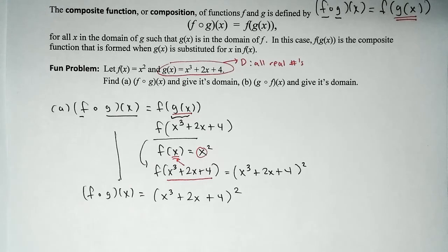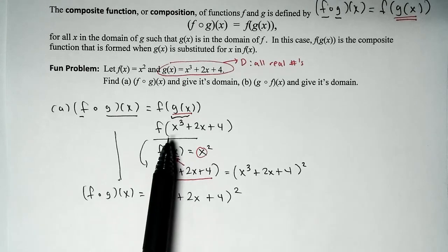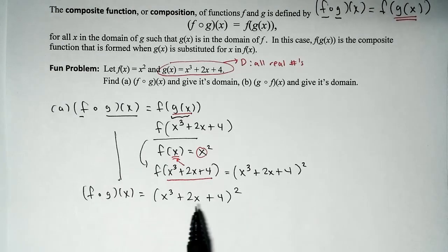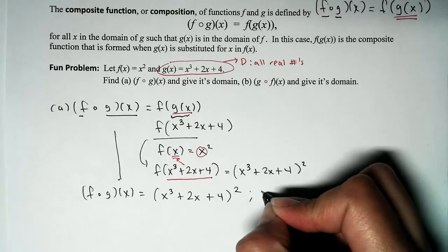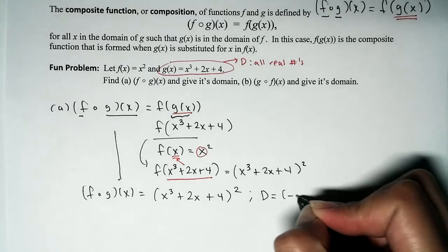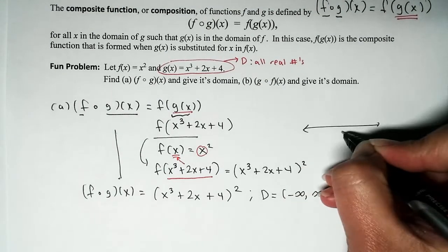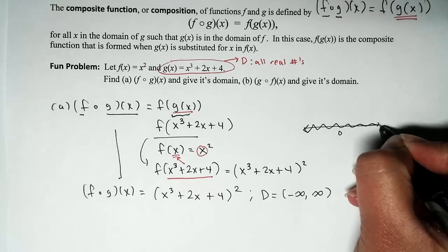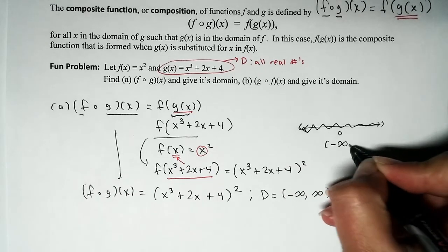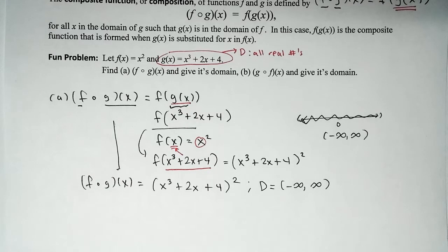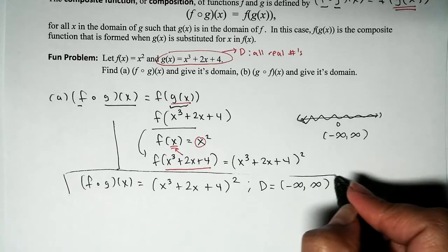What is the domain? The domain of the inside function G is the set of all real numbers. Since squaring a polynomial keeps it a polynomial, the domain of F of G of X is also the set of all real numbers, written in interval notation as negative infinity to positive infinity.